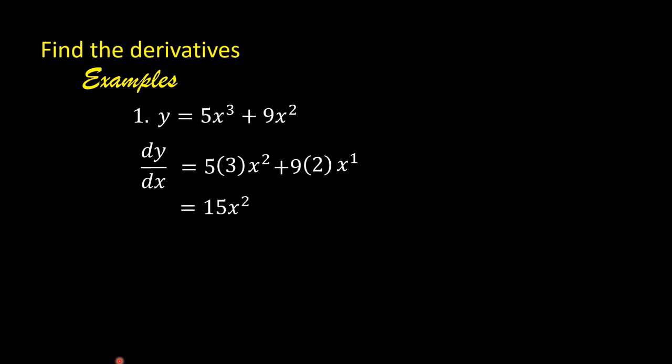5 times 3 is 15, so we have 15x squared. 9 times 2 is 18, so we have 18x. The answer is 15x squared plus 18x.